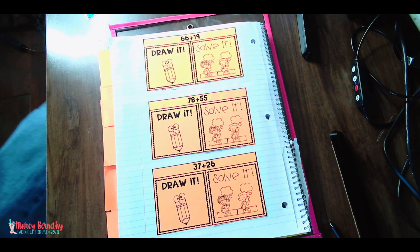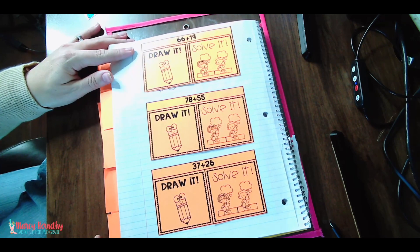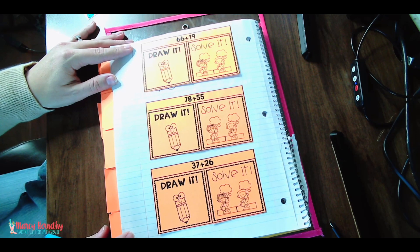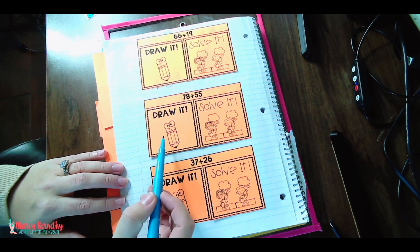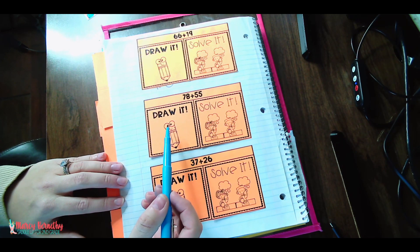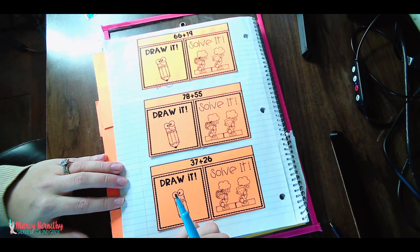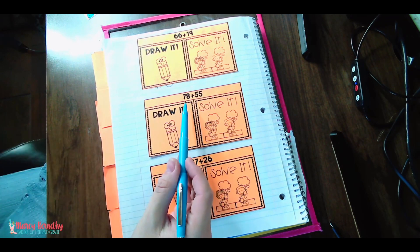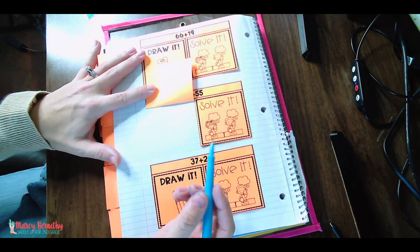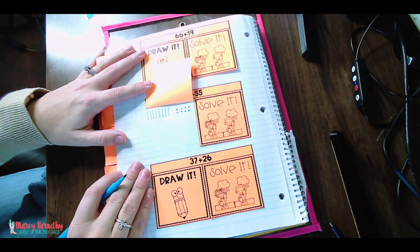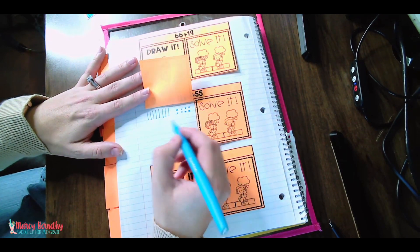So let me show you how you would show and model this strategy using your pencil. Now in this example that I am going to show you, we're actually going to be using an activity from my addition with regrouping unit. This is an interactive notebook activity that your kids could use to practice this particular strategy. And we call this draw it and solve it. So what they are going to do is underneath this first flap where it says draw it, they are going to actually draw out the base 10 blocks and then they will write the problem vertically under the solve it tab and solve for the sum. So let me show you how this would work. We have the numbers 78 plus 55. They're going to lift up the draw it tab and first they're going to draw out 78. Then they're going to draw out the number 55 right below it.